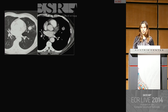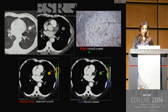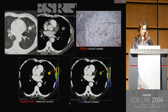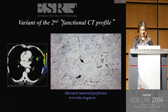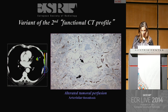A variant of the second functional profile shows a tumor with high vessel count on pathological slide, high leaky tumoral vessels with high permeability associated with low blood volume. In this case, the altered tumoral perfusion is explained by the presence of arterial thrombosis.